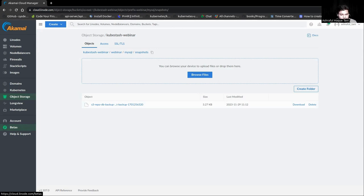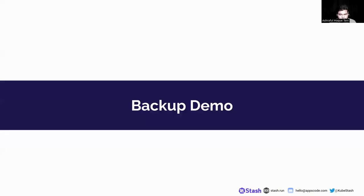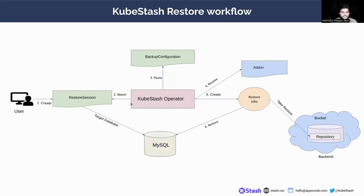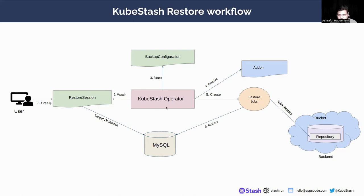Now let's move on to the restore process. Here is the KubeStash restore workflow. Our aim is to restore the snapshot that we took as backup in our backend. For this, we first have to create a RestoreSession containing the data source, including snapshot information and details of the database to be restored. KubeStash then resolves the add-on and a restore job is created, executing the restore logic for MySQL — the snapshot will be taken from the backend and put into the MySQL database.